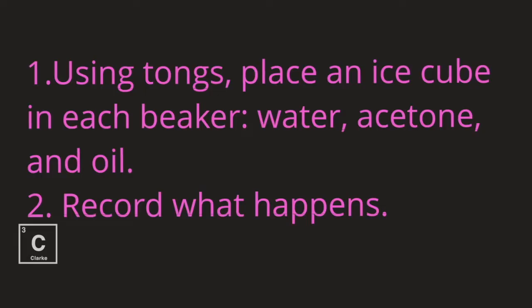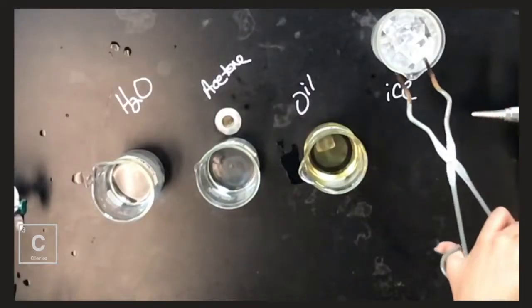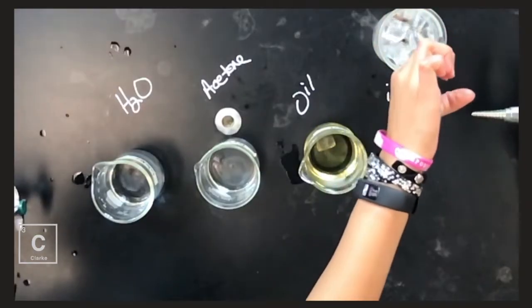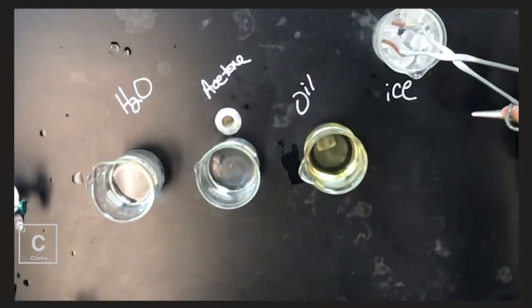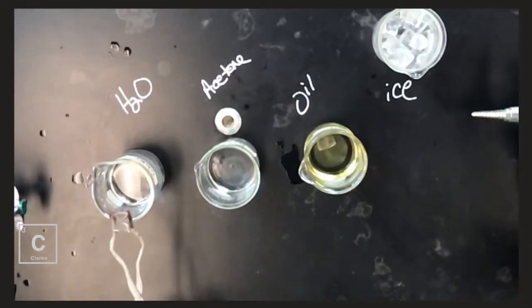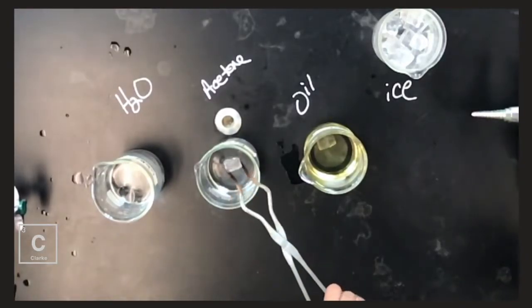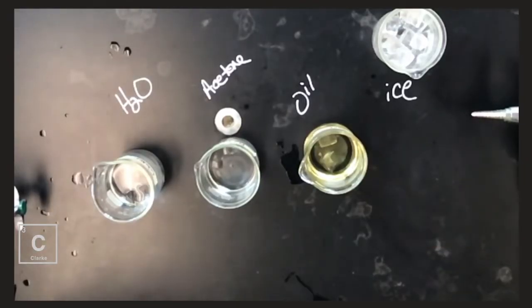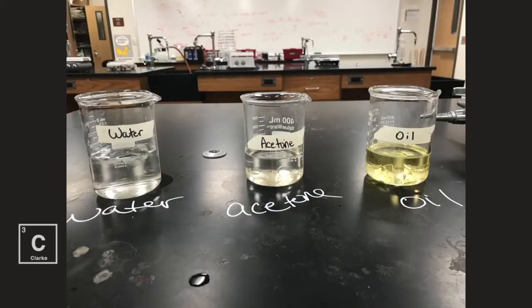Using tongs, place an ice cube in each beaker. Water, acetone, and oil. Record what happens. My ice floated in the water. My ice sunk in the acetone. Mine sunk in the oil. Can y'all even see that? We've got some ice here. Ice, ice, ice, ice, ice.